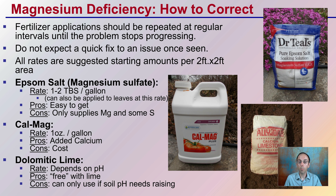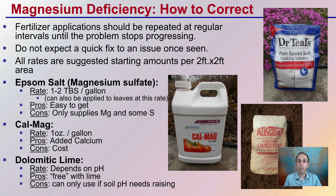There's a CalMag product — this one's by Botanicare. You want to start at about an ounce to a gallon. The advantage is that it supplies the plant with magnesium but also calcium. That could be an issue especially if you're growing in coco coir. It is the most expensive of the options presented here, but it does have the ability to help correct that deficiency, and especially if you have a calcium issue, it can help correct that as well.